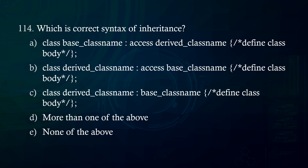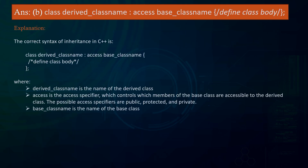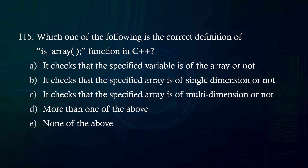Which is the correct syntax of inheritance? A. class base_class_name : access derived_class_name { class body }. B. class derived_class_name : access base_class_name { class body }. C. class derived_class_name base_class_name { class body }. D. More than one of the above. E. None of the above. Answer: class derived_class_name : access base_class_name { class body }. Explanation: The correct C++ inheritance syntax uses the derived class name, followed by a colon, the access specifier (public, protected, or private), and then the base class name.